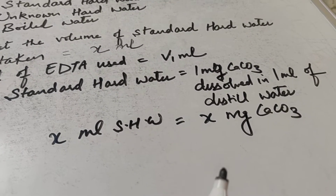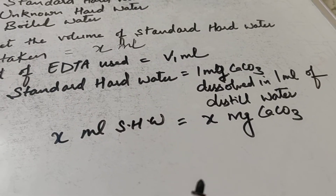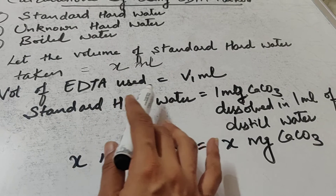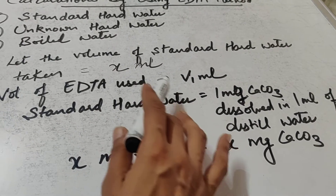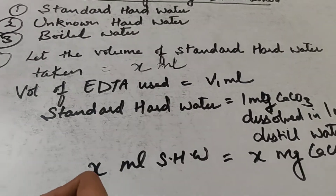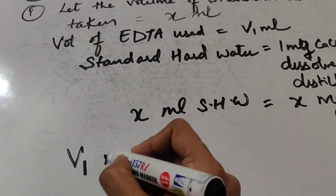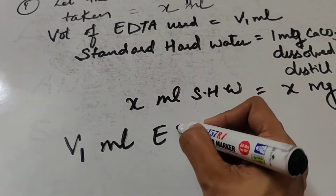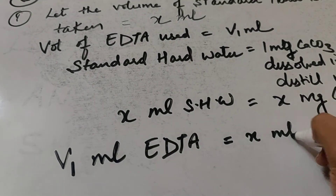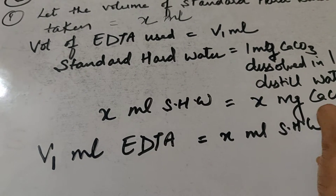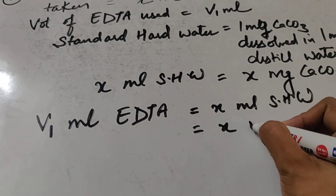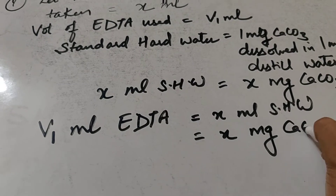In 1 ml of standard hard water, there is 1 mg CaCO₃, so in X ml there is X mg CaCO₃. You have said the volume of EDTA used is V1 ml, which neutralizes X ml of standard hard water. So we can say: V1 ml EDTA neutralizes X ml standard hard water, which means it neutralizes X mg of CaCO₃.